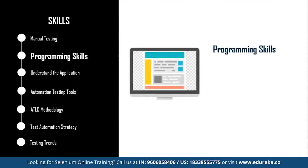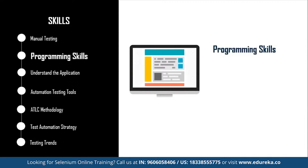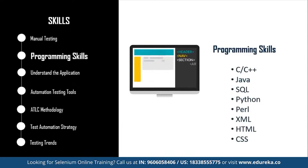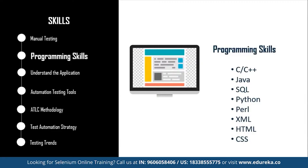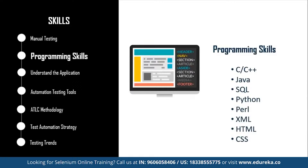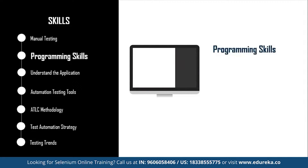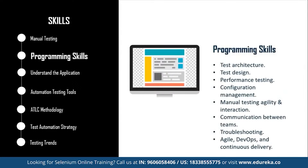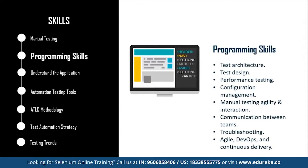The second skill is programming skills. It is very important to possess excellent technical programming skills. Many newcomers ask whether they need programming skills for automated testing — and the answer is yes. You need to be proficient in languages such as C, C++, Java, SQL, Python, Perl, XML, HTML, and CSS. Additionally, a manual tester should master technical skills such as test architecture, test design, performance testing, configuration management, manual testing agility, team communication, troubleshooting, and agile DevOps and continuous delivery.